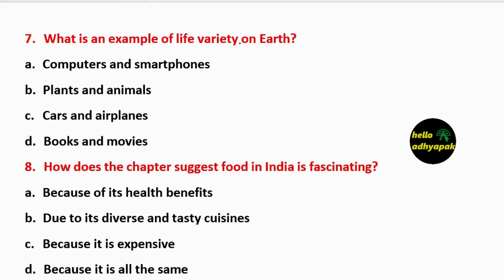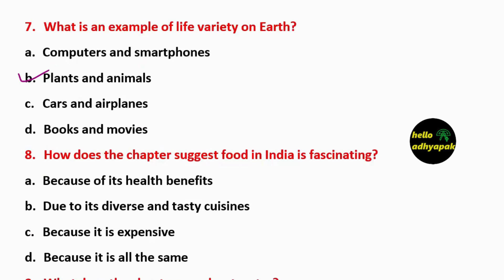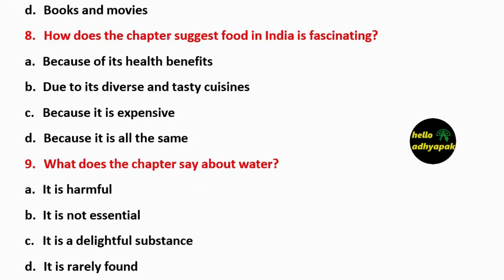Question 7: What is an example of life variety on earth? Options include computer, smartphone, plant, animal, car, planes, book, movies. The correct answer is plants and animals.